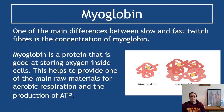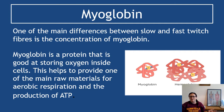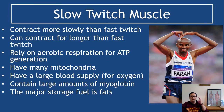One of the differences between slow and fast twitch muscle fiber is the concentration of myoglobin. Myoglobin is a protein that's good at storing oxygen inside cells, and this helps provide one of the raw materials for aerobic respiration — which is oxygen — and therefore the production of ATP. More myoglobin means more aerobic respiration and more ATP production is possible.